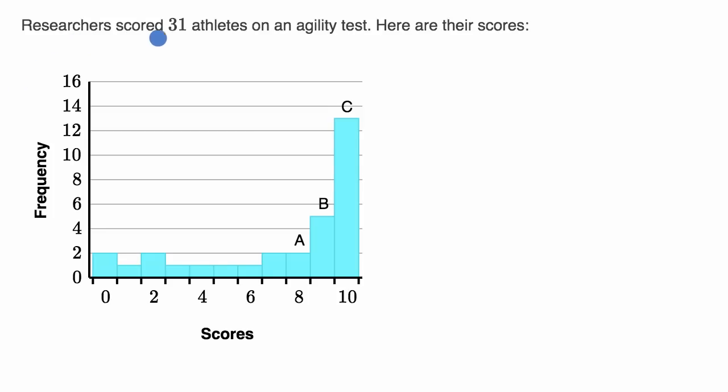We are told researchers scored 31 athletes on an agility test. Here are their scores in this histogram. What I'm going to ask you is which of these intervals, interval A, B, or C, contains the median of the scores and which one, or give an estimate of which one contains the mean of the scores? Pause this video and see if you can figure that out.